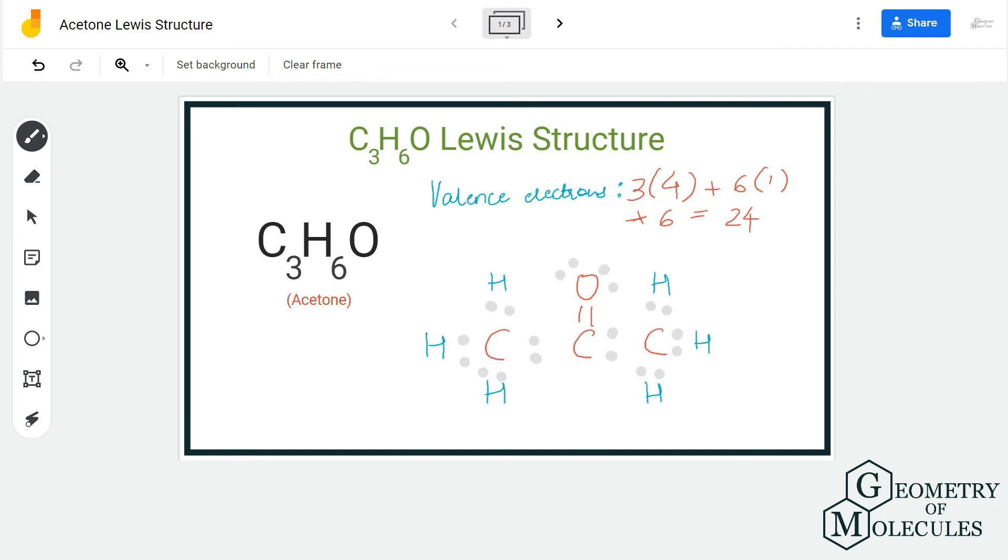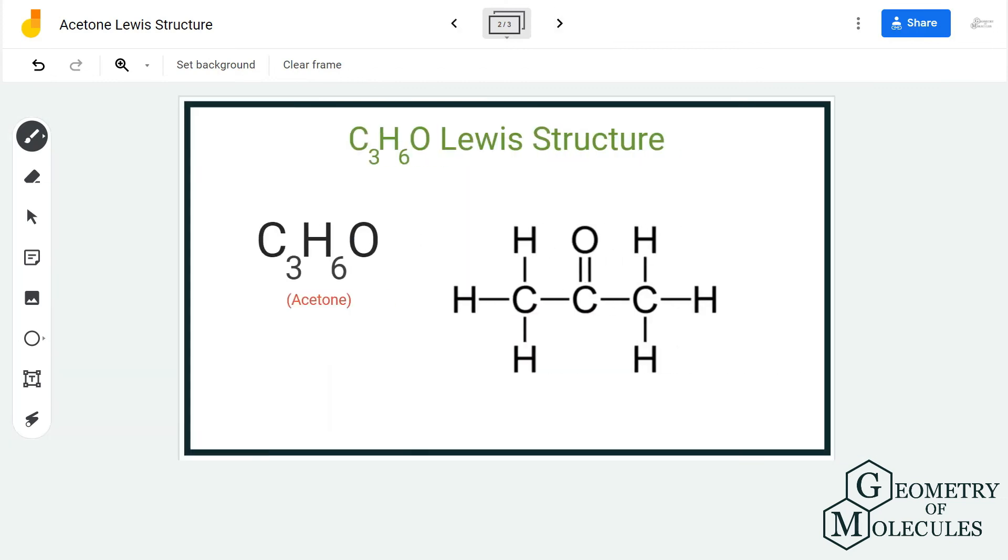These four electrons will be arranged around the oxygen atom. Doing that, you will see that each atom in this molecule has a complete octet as it has eight valence electrons in its outer shell, except for hydrogen as it is an exception to the octet rule.